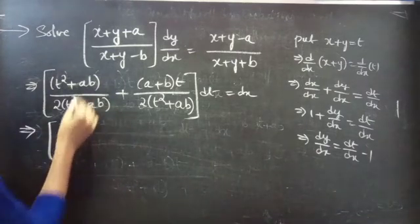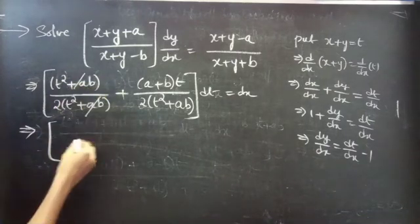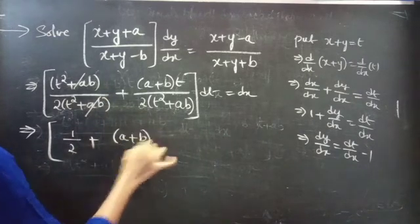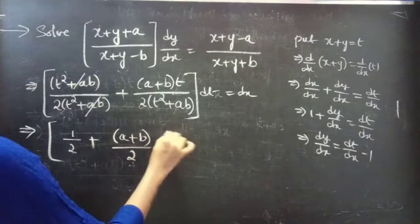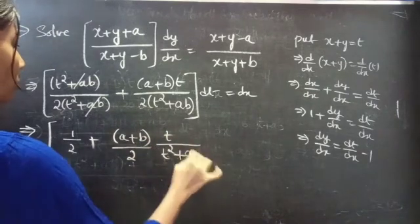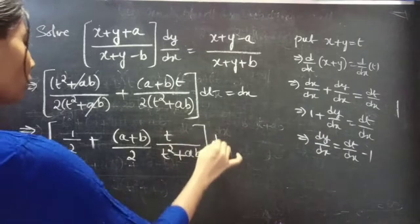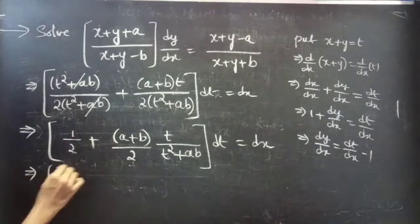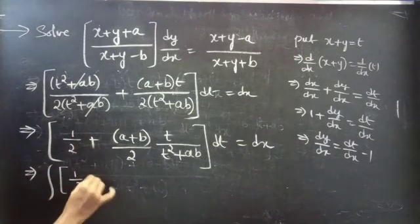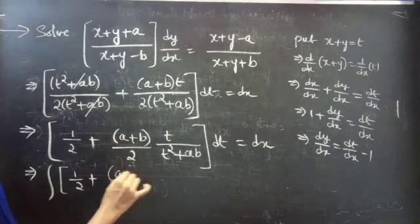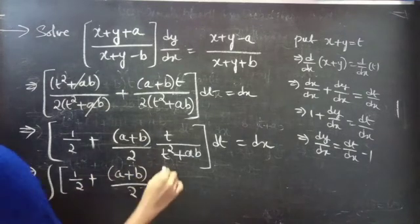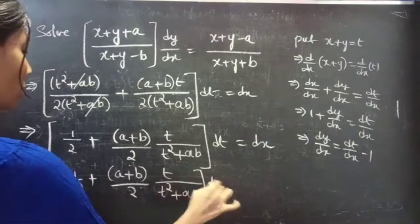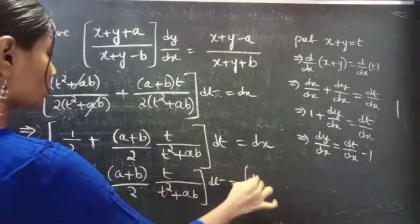The variables are separable. Cancelling t² + ab where possible gives 1/2 + (a+b) / [2(t² + ab)] · dt = dx. Now we can perform integration: ∫ [1/2 + (a+b) / (2(t² + ab))] dt = ∫ dx.